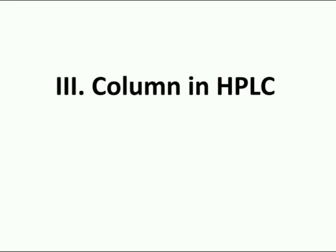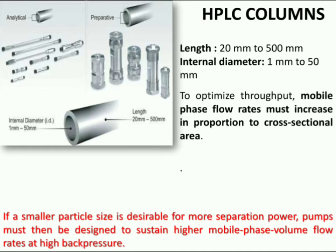The third and most important part of the HPLC system is the column, where the separation is performed. Recent columns are often prepared of stainless steel material instead of glass, because stainless steel is tolerant towards a large variety of solvents. The packing material generally used is silica or polymer gels, compared to calcium carbonate.